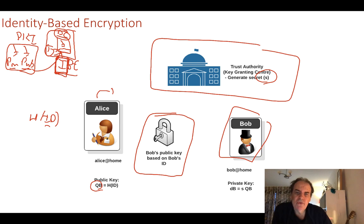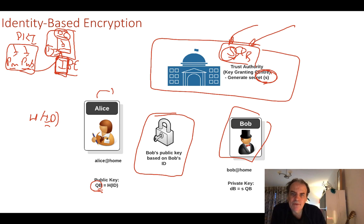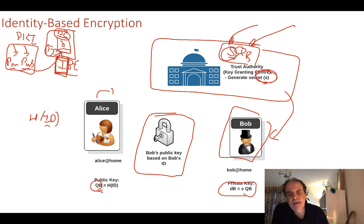Bob's private key is generated through the key granting authority. The key granting authority generates a secret scalar value S. Bob's private key becomes his public key point multiplied by S — this is an elliptic curve point multiplied by a scalar. It's not possible to find the value of S even if you know the private key. Bob then uses that secret key to decrypt content encrypted with his public key, which is derived from his identity.